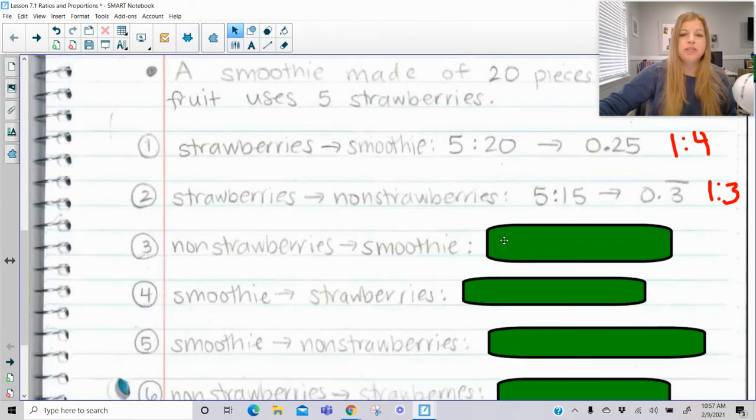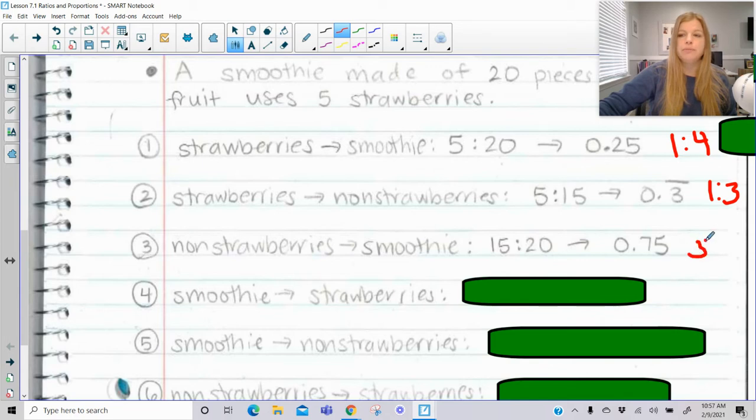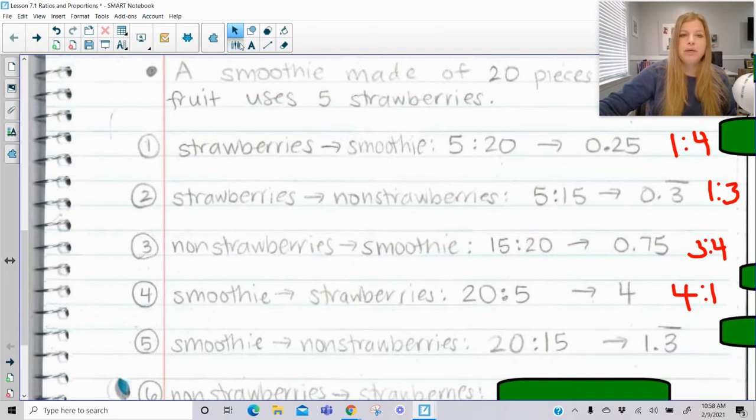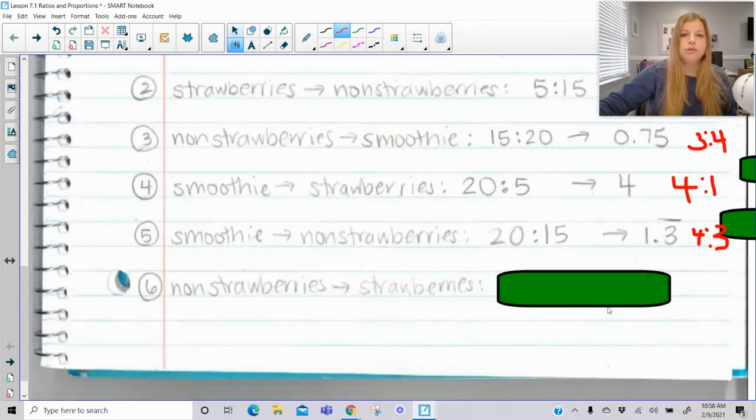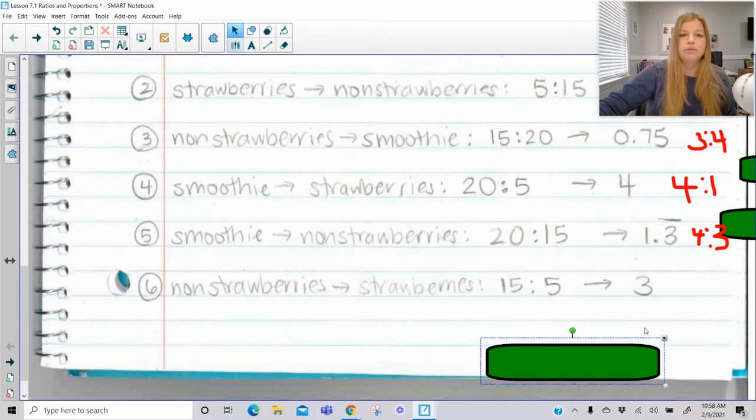Non-strawberries to smoothies: there's 15 non-strawberries to 20 pieces of fruit in the smoothie. 15 to 20 is either 0.75 or 3 to 4. Smoothie to strawberries: you can take the total and relate it to one of the parts of the whole. 20 to 5 would simply be 4, or a ratio of 4 to 1. Smoothie to non-strawberries: 20 to 15 is 1.3 repeating, or 4 to 3. Non-strawberries to strawberries is 15 to 5, which is 3, or 3 to 1.